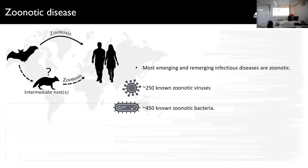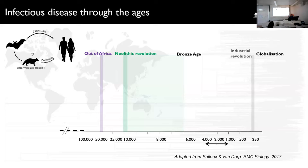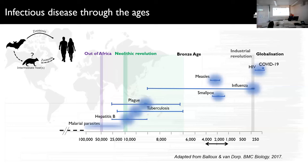When I say zoonotic disease, I mean microorganisms that can spread from animals to humans. We care about them because most emerging and re-emerging infectious diseases are zoonotic. Current estimates suggest there are around 250 known zoonotic viruses and about 450 known zoonotic bacteria — very many to keep us busy. Some of them have been plaguing us for a really long time, and here's a timeline mapping the estimated age of emergence of some major human-associated pathogens.